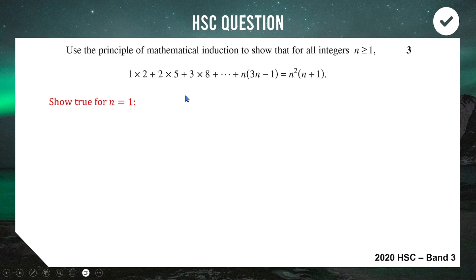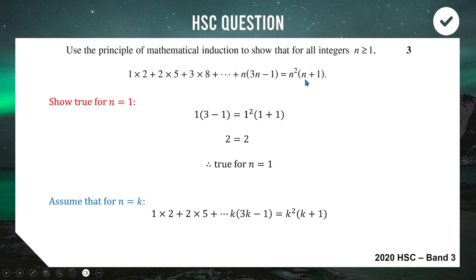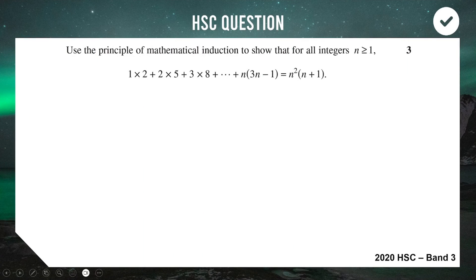Step 1: when n=1, the left-hand side is 1×(3×1−1) = 1×2 = 2. The right-hand side is 1²×(1+1) = 1×2 = 2. So 2 equals 2 — it works. Step 1 complete, true for n=1. Step 2: we assume the expression holds true when n equals k, rewriting the question and changing the n's to k's. That's our assumption.